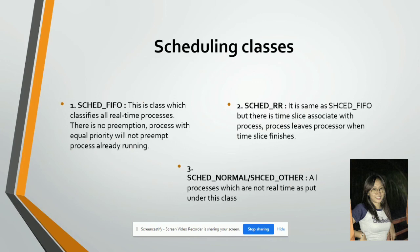Scheduling classes: Number one is SCHED_FIFO — this class classifies all real-time processes. There is no preemption; a process with equal priority will not preempt a process already running. Number two is SCHED_RR — it is the same as SCHED_FIFO but there is a time slice associated with each process, and the process leaves the processor when its time slice finishes. The last one is SCHED_NORMAL or SCHED_OTHER — all processes which are not real-time are put under this class.